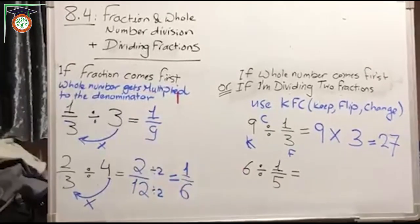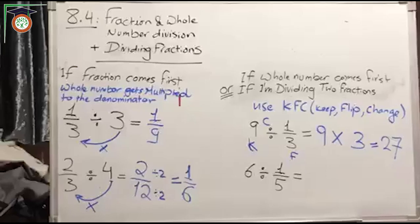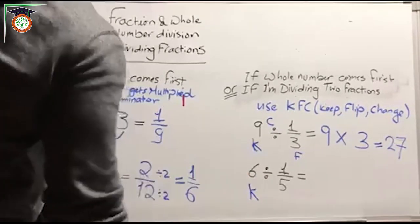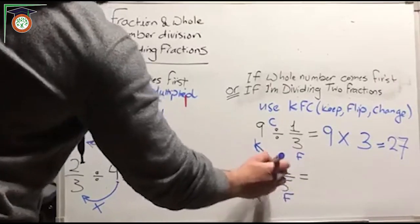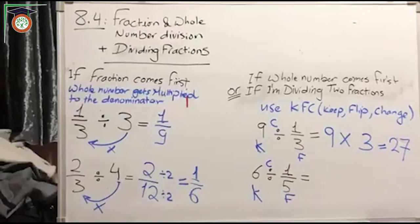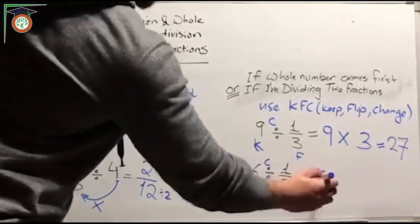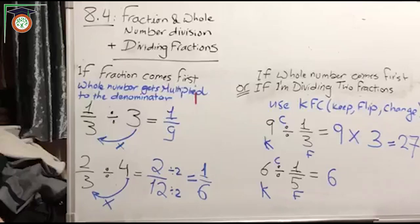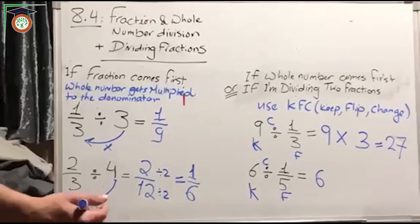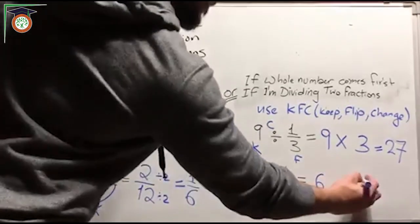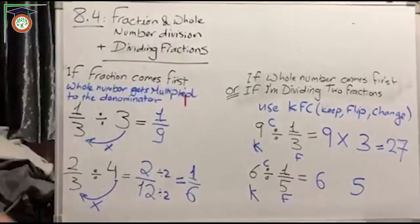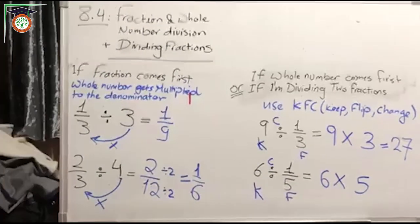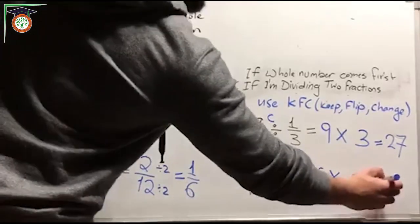Now for this problem, I have 6 divided by 1 over 5. I'm going to keep the 6, flip 1 over 5 — it becomes 5 over 1, and any number divided by 1 is the same, so it's 5 — and change the sign to multiplication. So I have 6 multiplied by 5, which gives me 30.